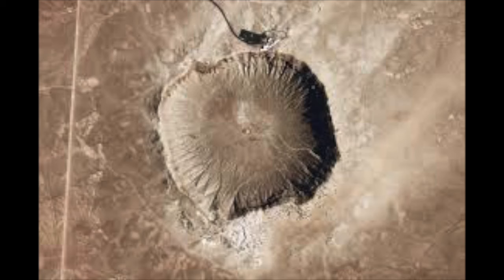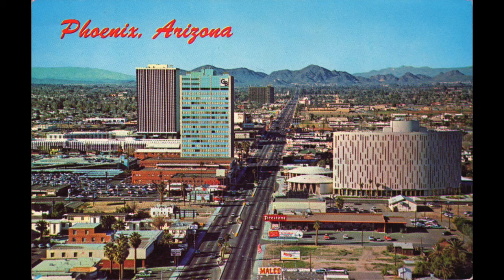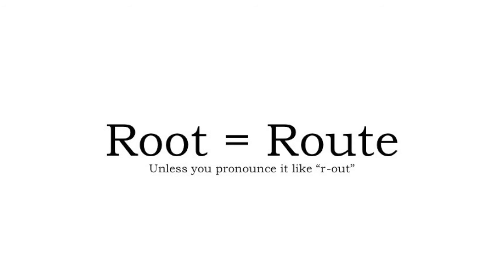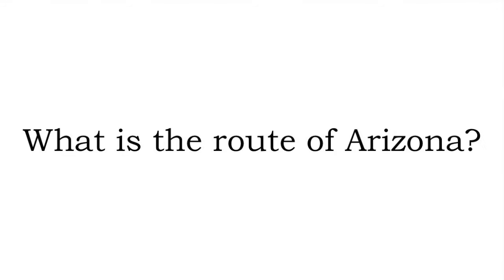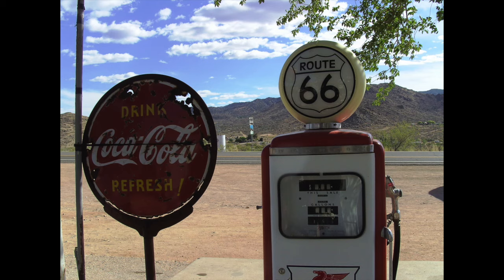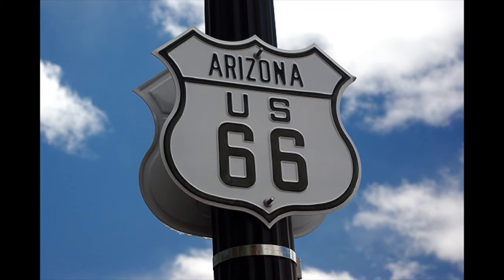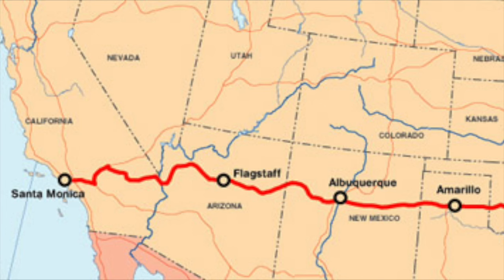Then what do meteor crater and Phoenix both have in common? Well, the word root also sounds like route, which completely changes the question again. What is the route of Arizona? The most famous road in Arizona is US Route 66, which at the same time passes through meteor crater and Phoenix. And this has also been portrayed in many different movies as well.